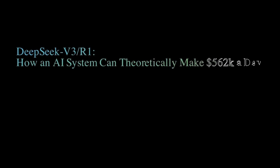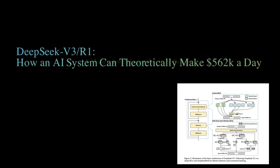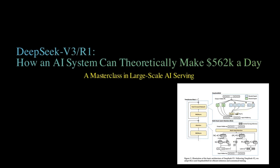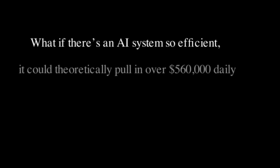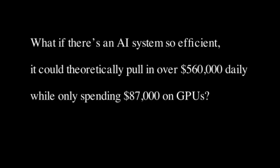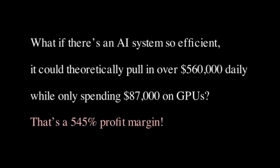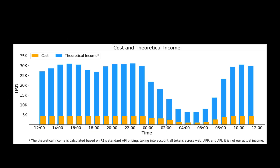What if I told you there is an AI system so efficient that it could theoretically pull in over $560,000 in daily revenue while only spending $87,000 on GPU cost? That's a staggering 545% profit margin, and this is exactly the numbers of DeepSeek V3 or DeepSeek R1's inference system.